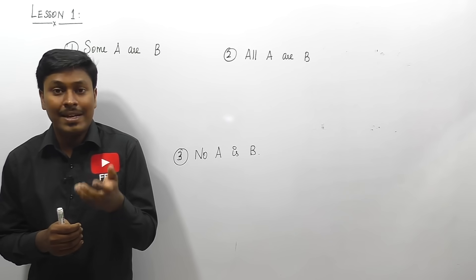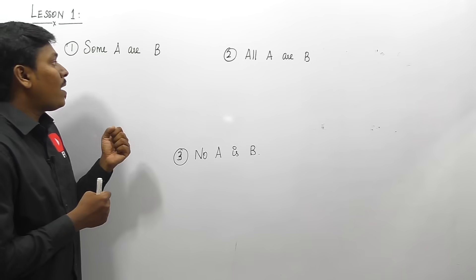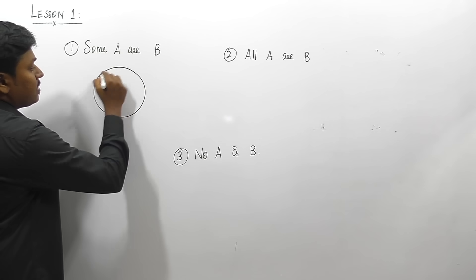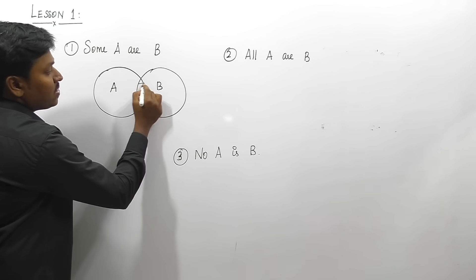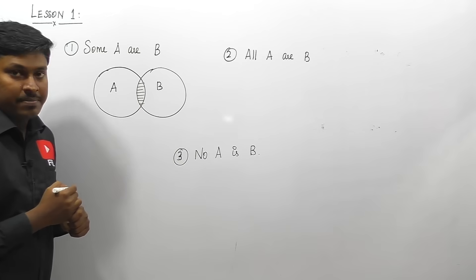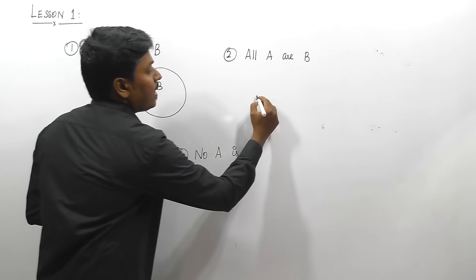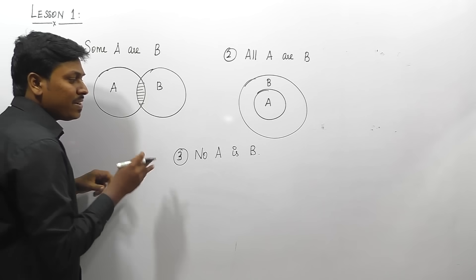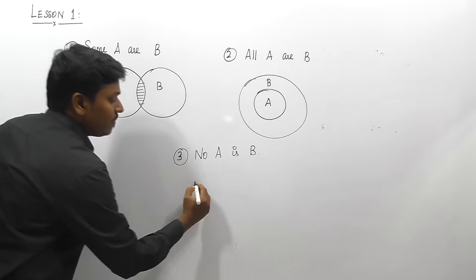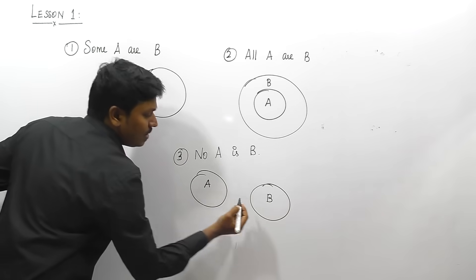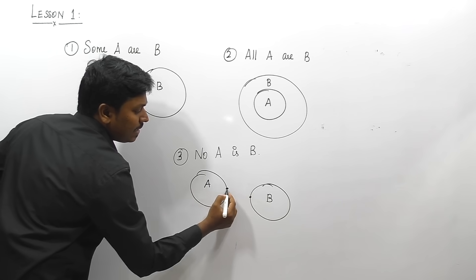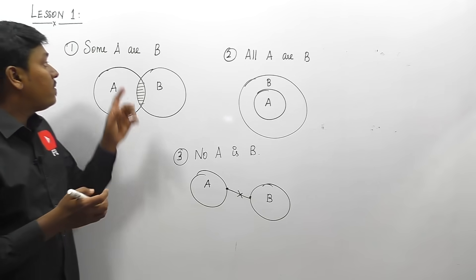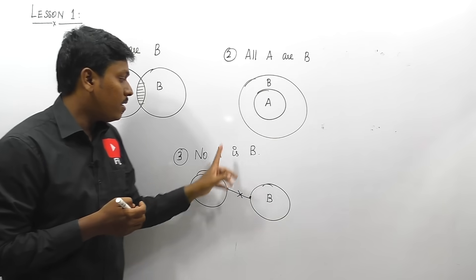Before solving all the questions, you should know the Venn diagram for three important statements. Statement one is 'Some A are B' — draw two overlapping circles, one for A and one for B; the overlapping region represents 'some A are B'. Statement two is 'All A are B' — draw circle A inside circle B. Statement three is 'No A is B' — the meaning is there is no connection between A and B, so draw two separate circles.